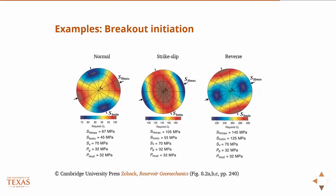So with that and a failure criterion — in this case I've just used the simplest one, Mohr-Coulomb — we can create these plots that give us some information about breakout initiation. The stresses provided, along with the pore pressure and the wellbore pressure or mud pressure, are translated into the wellbore frame, then turned into the principal stresses. And then with those principal stresses, we look at the Mohr-Coulomb failure criterion, and they plot the required unconfined compressive strength of the rock.